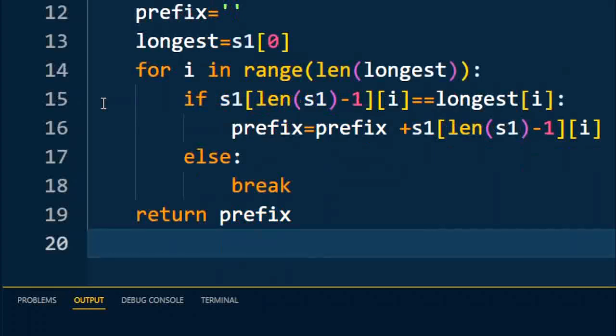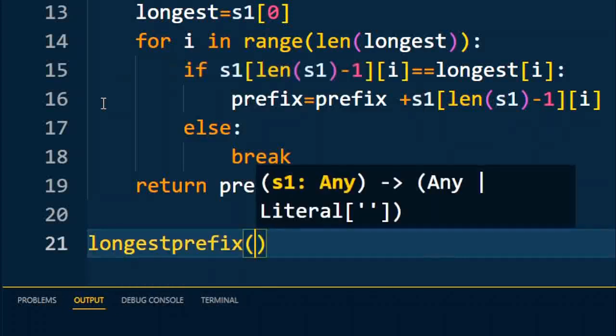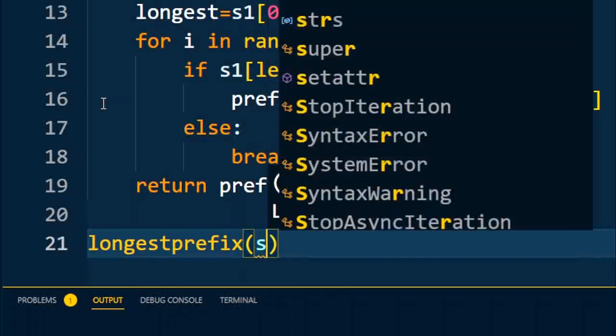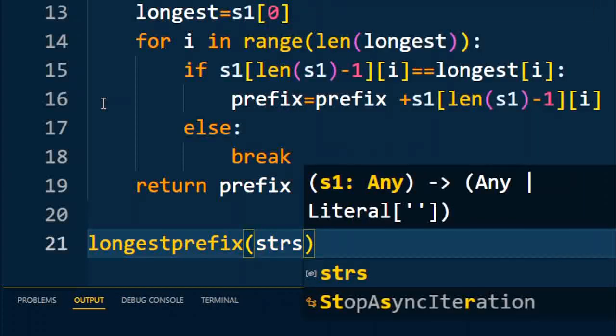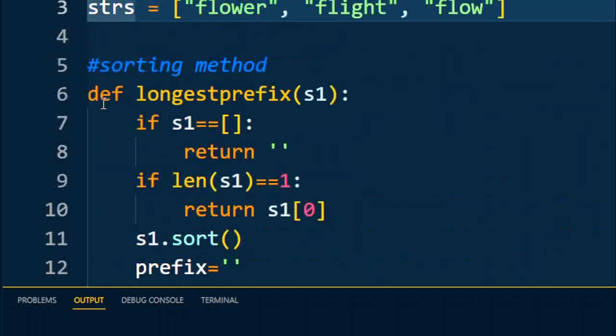Now I'm going to call the function, longest_prefix, and the input to the function is strings. The string I already declared is flower, flight, and flow.